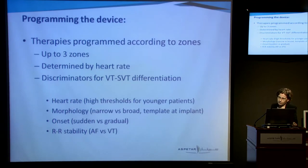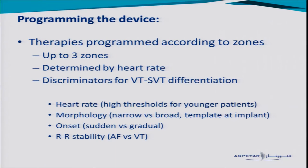The device will only do what we program it to do. We program therapies according to heart rate zones, with up to three therapeutic zones. For the patient to receive a therapy, the heart rate has to fall within one of those zones. You may ask: what happens if the athlete is training, running very fast, mounting a sinus tachycardia of 180-190 beats per minute — will they get shocked? It depends on how the device is programmed. If the therapeutic zone has a low threshold of 170 beats per minute, then yes, they're at risk of an inappropriate shock.